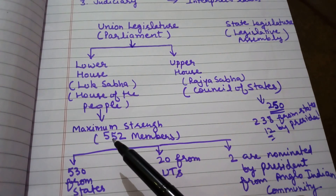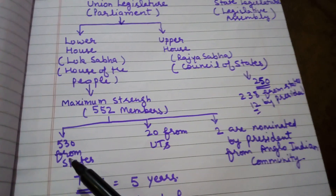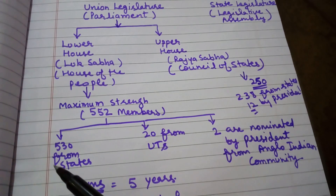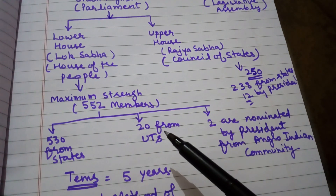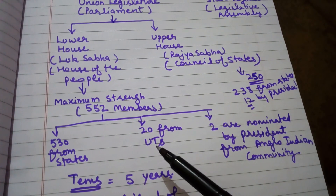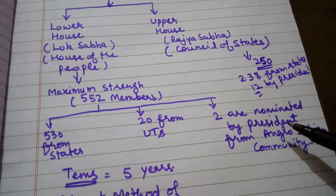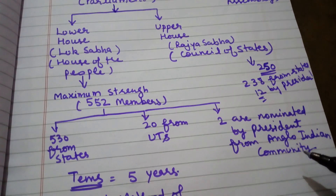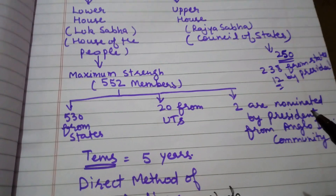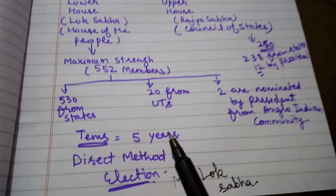Lok Sabha has 552 members. From these, 530 members are elected from all the states of India by the direct method of election, 20 members are elected from all the union territories of India through the direct method of election, and the remaining two are nominated by the President of India from the Anglo-Indian community. The tenure of Lok Sabha is five years.